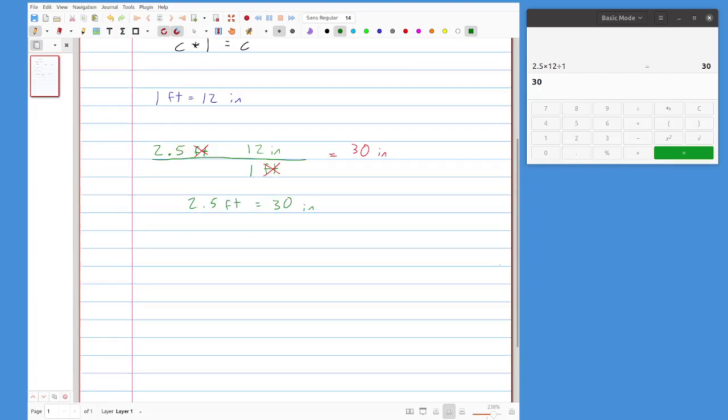Now we can do the same thing in the other direction. Let's say instead of starting with feet, I started with something like 93.5 inches. I again want to set up a fraction, but in this case I want to have the inches part down here on the bottom and the foot up on top. And what that's going to do is that means the inches are going to cancel each other out, but I'll be left with feet.